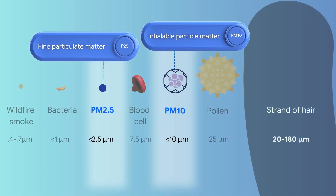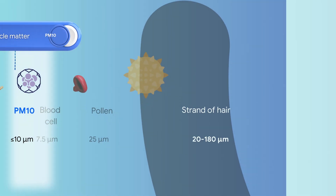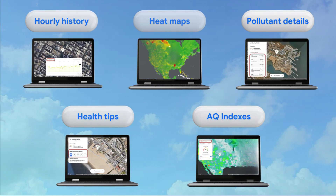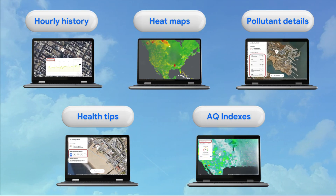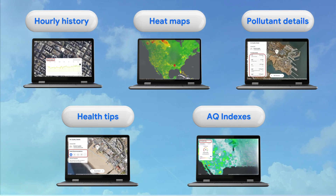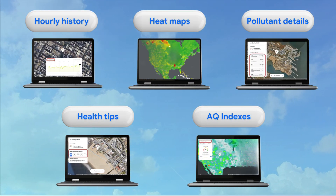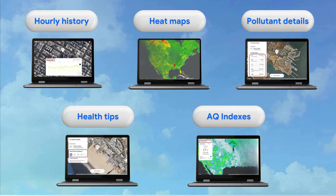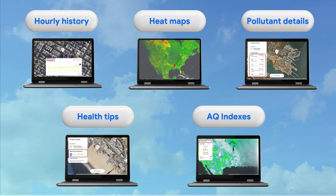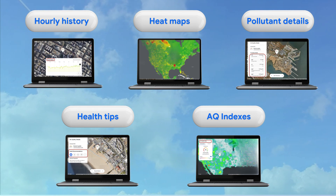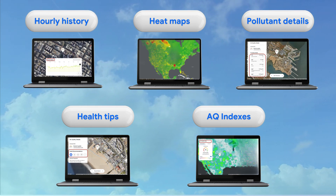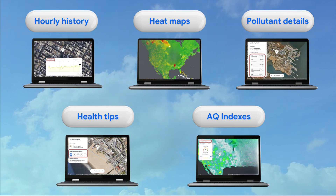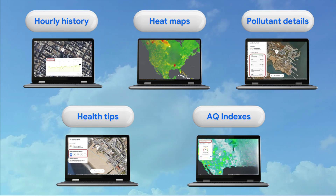The Air Quality API is a powerful tool that provides access to reliable air quality data, heat maps, pollutant details and recommendations to help you make more informed decisions about your exposure to air pollution.